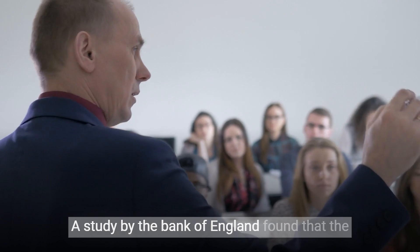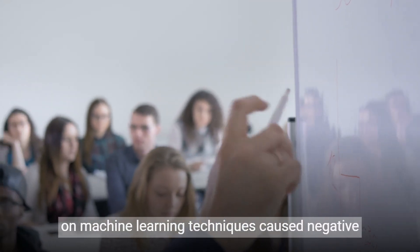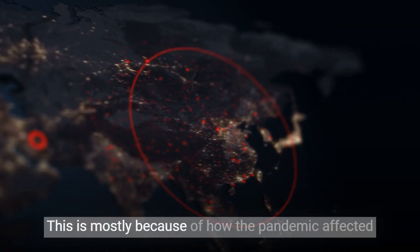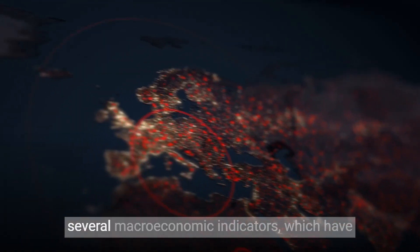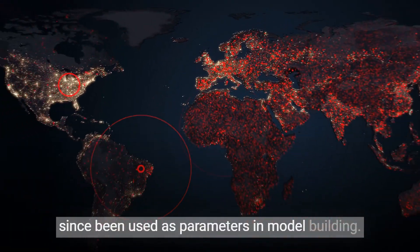A study by the Bank of England found that the performance of artificial intelligence models based on machine learning techniques caused negative impacts on roughly 35% of banks during the epidemic. This is mostly because of how the pandemic affected several macroeconomic indicators, which have since been used as parameters in model building.